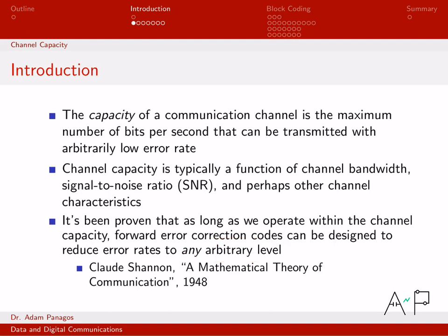So if you want an error rate of 10 to the negative 6, you can get it. If you want an error rate of 10 to the negative 10, you can get it. What about 10 to the negative 50? You can get it. There exist forward error correction codes that ensure arbitrary levels of performance. The catch being, you better be within the channel capacity.